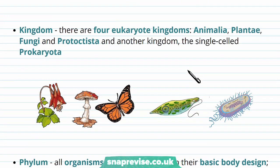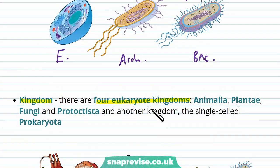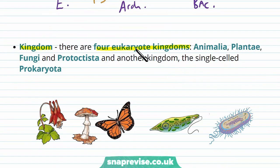After classifying organisms into three domains, we then choose their kingdom. There are four eukaryote kingdoms. So after we've determined something is a eukaryote, within that we would have four kingdoms: Animalia, Plantae, Fungi, and Protoctistae.